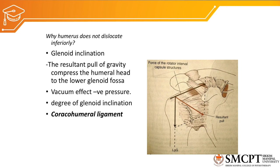The coracohumeral ligament also contributes to static stabilization by preventing both inferior and superior translation of the humeral head. Additionally, the glenoid labrum increases the depth of the glenoid fossa, providing more surface area for the humeral head and thereby increasing the static stability of the glenohumeral joint.